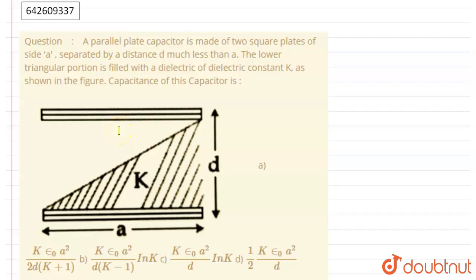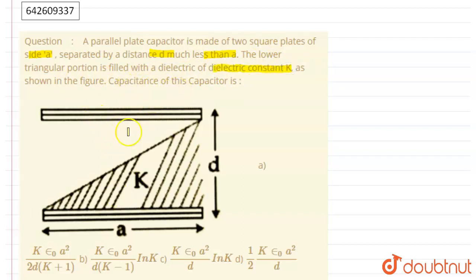According to the question, a parallel plate capacitor is made of two square plates of side A, and the separation between the plates is D, where D is much less than the side of the plate. The lower triangular portion is filled with a dielectric of dielectric constant K, as shown in the figure. We have to find the capacitance of the capacitor. For this type of question, we take an element, find the capacitance of the element, and then integrate the relation.